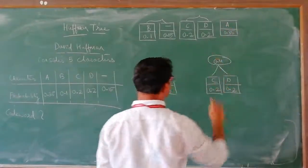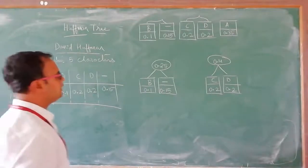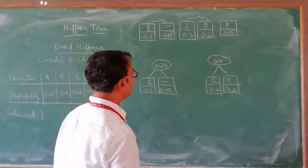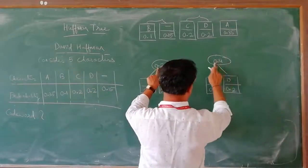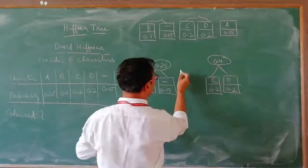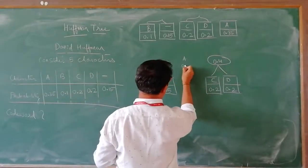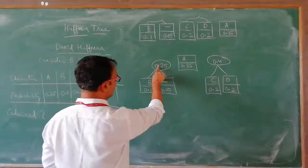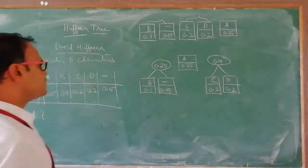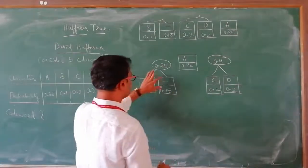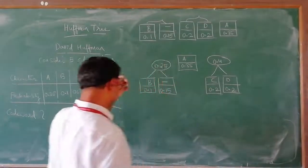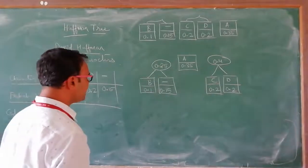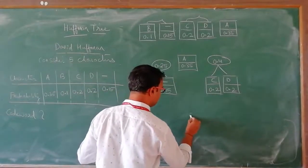There is one more character remaining whose probability is 0.35. We need to merge it again with some subtree. If you compare 0.25 and 0.4, this value lies in between. So I bring A (0.35) here and merge it with the 0.25 subtree. Once you merge these two values — 0.25 and 0.35 — you get 0.6.